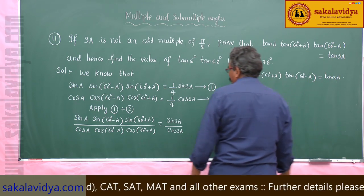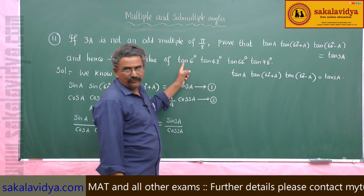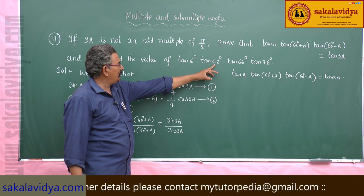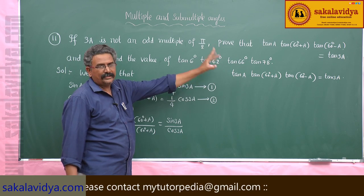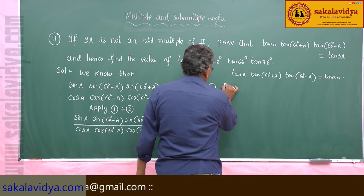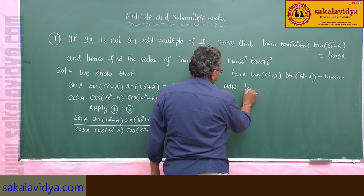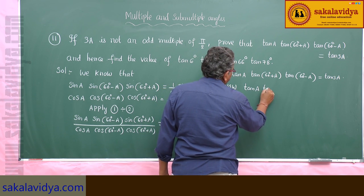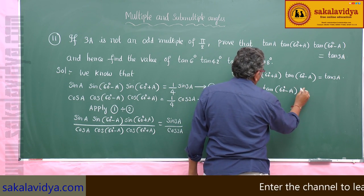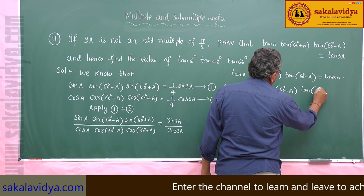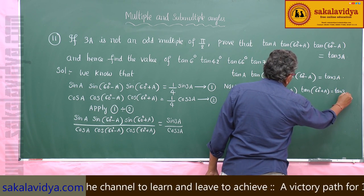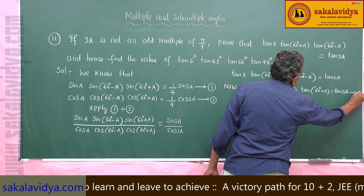Hence it is proved. Now we have to find the value of tan 60° · tan 42° · tan 66° · tan 78°. Consider tan A · tan(60° - A) · tan(60° + A) = tan 3A — say equation 3.